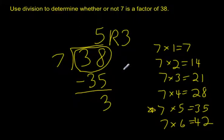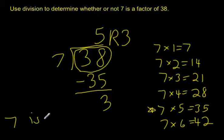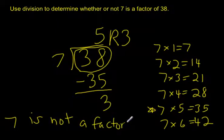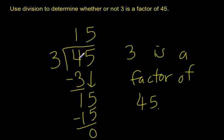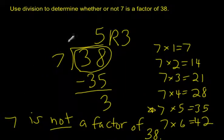Because I have a remainder — because my remainder is not 0 — 7 is not a factor of 38. I was not able to divide it evenly. Remember in my last example, when I did 45 divided by 3, there was no remainder. But with 38 divided by 7, there is a remainder. So 7 is not a factor of 38. It did not divide evenly.